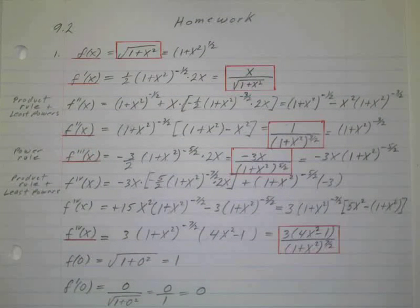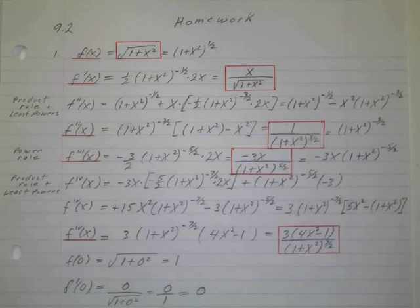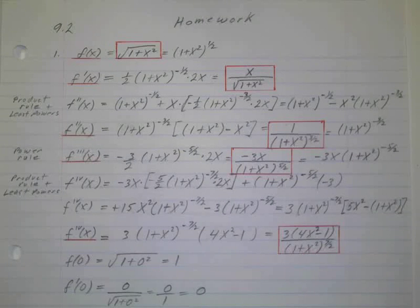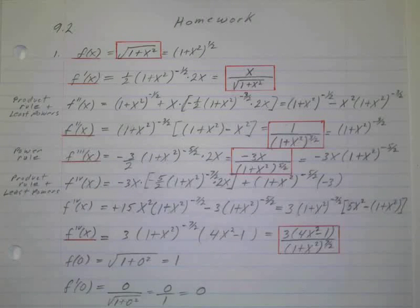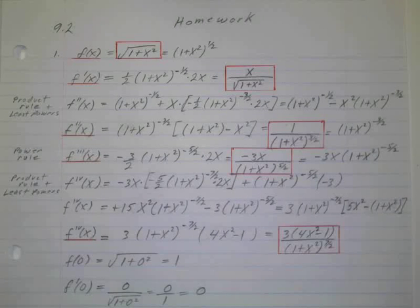This is section 9.2, number one, which is probably the beast of all the problems in the section. What you're asked to do is construct the fourth-order Taylor polynomial at x equals zero for the function.